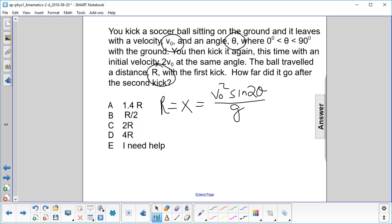So the initial range is actually going to be R, so we'll just leave that R there. And then we want to find our next range, or x new, when we double the velocity.